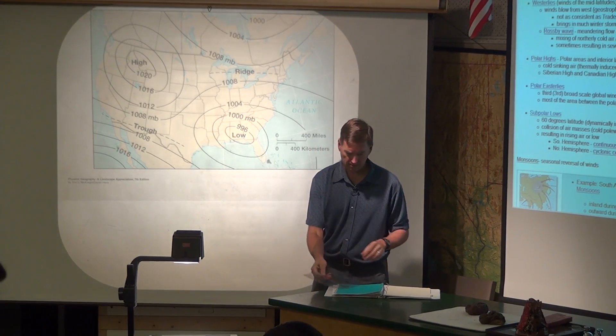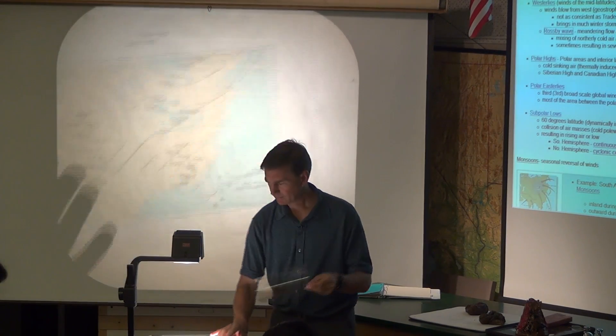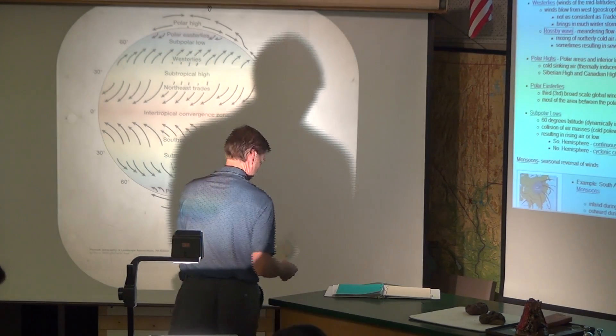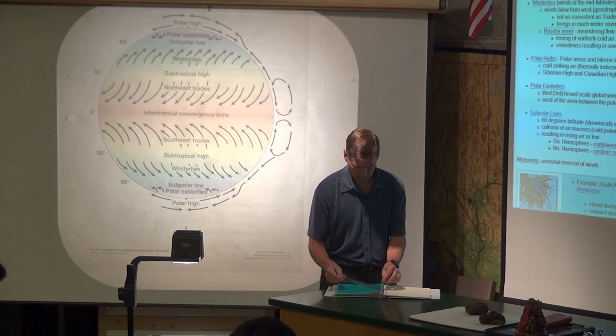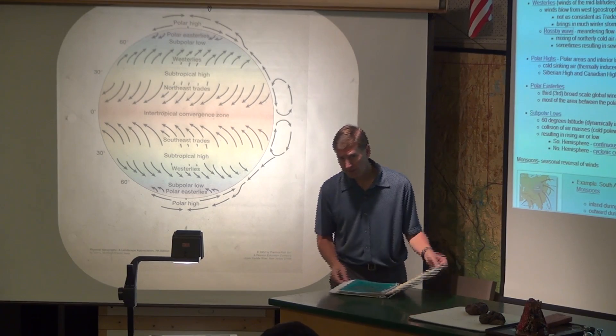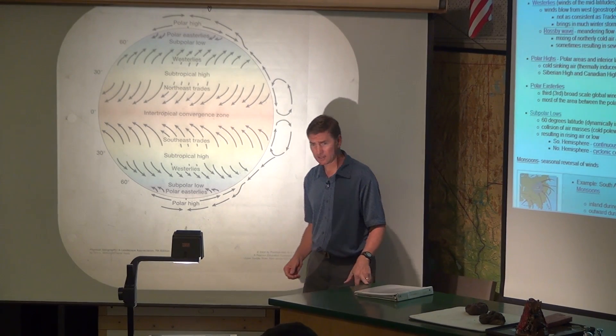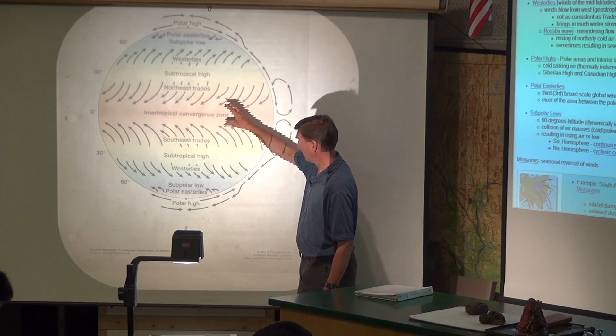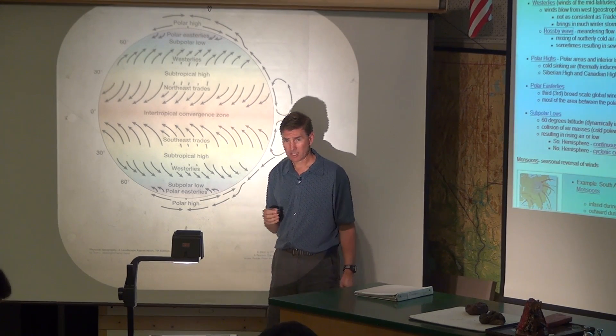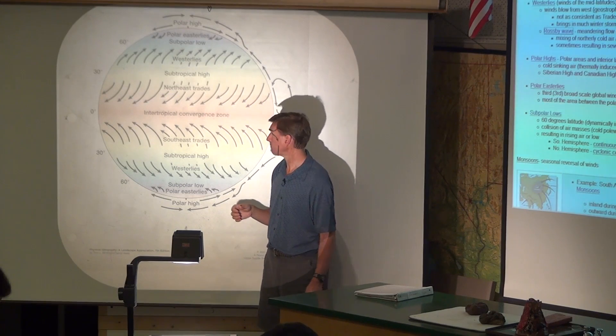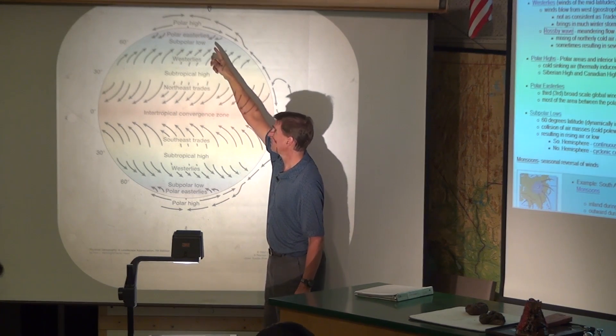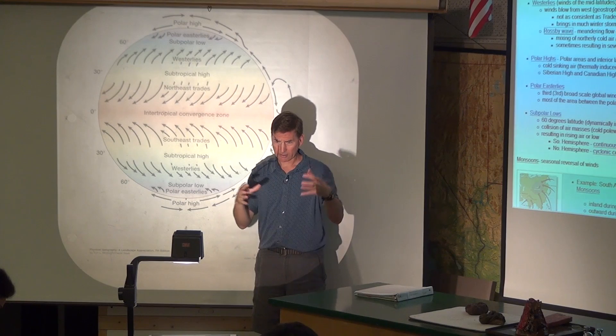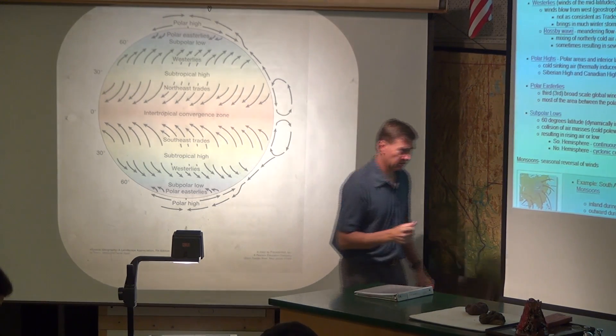The Rossby wave is in part responsible for that very cold air coming down from the north. It can go all the way down to Texas and Oklahoma where we have tornado alley. The next thing is the polar highs. To review for pressure, we have air that's rising or sinking and it can be thermally induced. For example, right here at the intertropical convergence zone the sun is directly overhead and that heat makes the air rise—that's thermally induced.